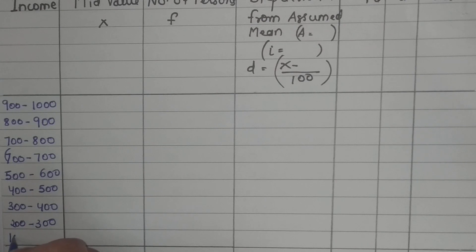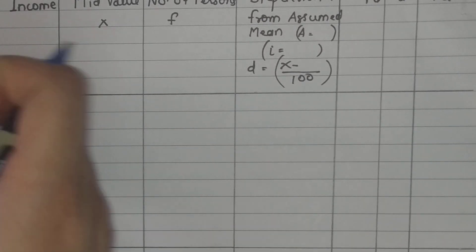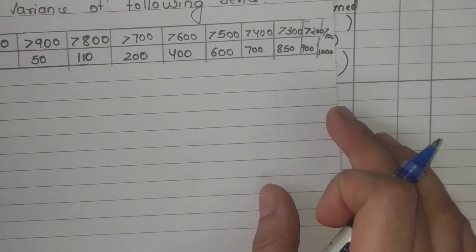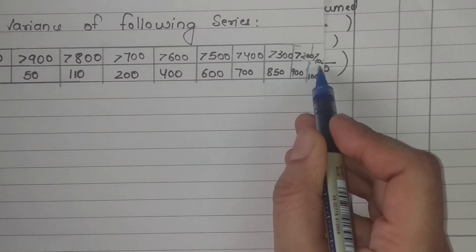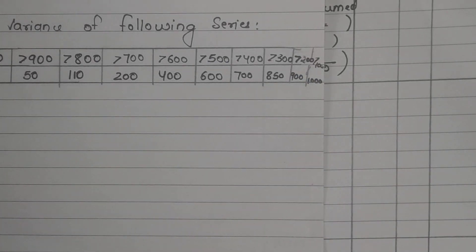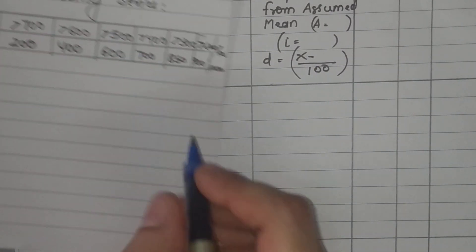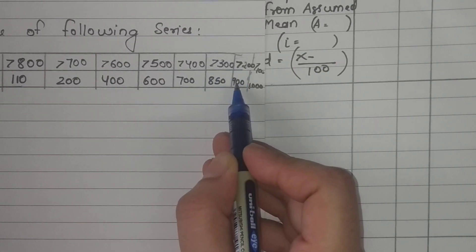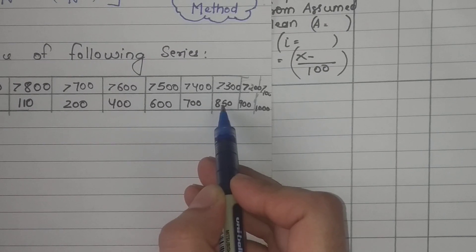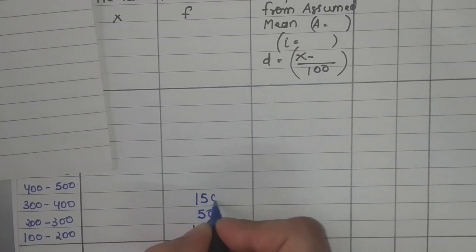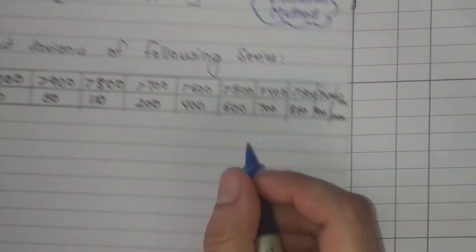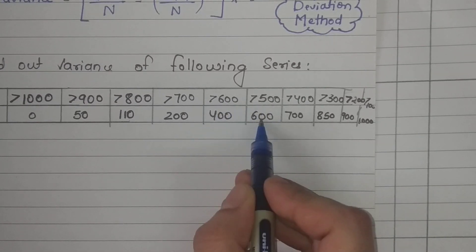The 9 class intervals are: 900–1000, 800–900, 700–800, 600–700, 500–600, 400–500, 300–400, 200–300, and 100–200. We fill the frequency column by reversing the cumulative data. Persons with income 100–200: 1000 minus 900 = 100. Income 200–300: 900 minus 850 = 50. Income 300–400: 850 minus 700 = 150. Income 400–500: the gap gives 200.